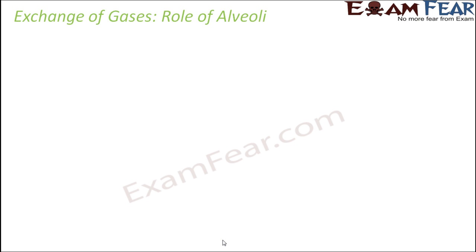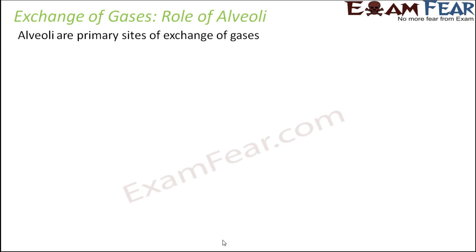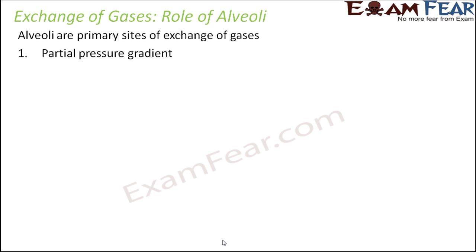We will look at the process of exchange of gases at the alveolar membrane — how it happens as per the pressure gradient. Alveoli are the primary sites of exchange of gases. We will look at each of the factors and how they play a role in the actual exchange. The first factor is the partial pressure gradient. We will see whether carbon dioxide and oxygen move from a region of higher partial pressure towards a region of lower partial pressure.